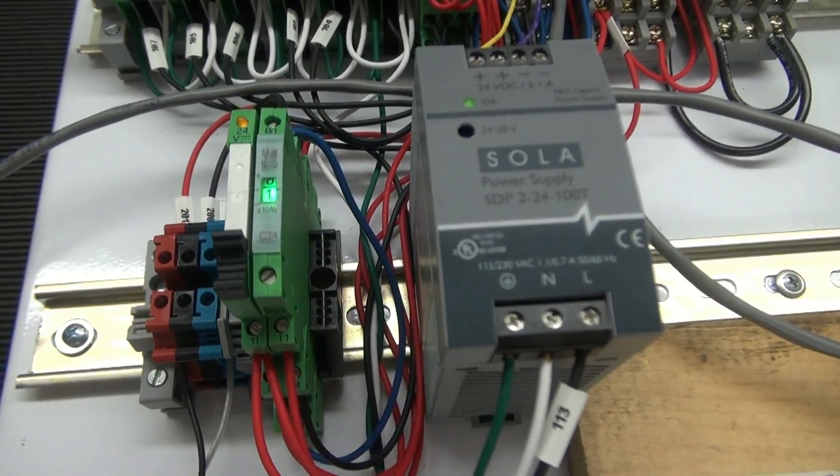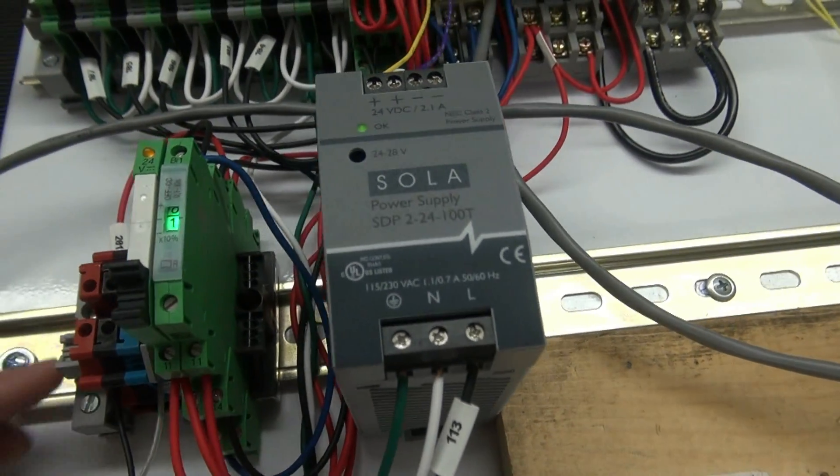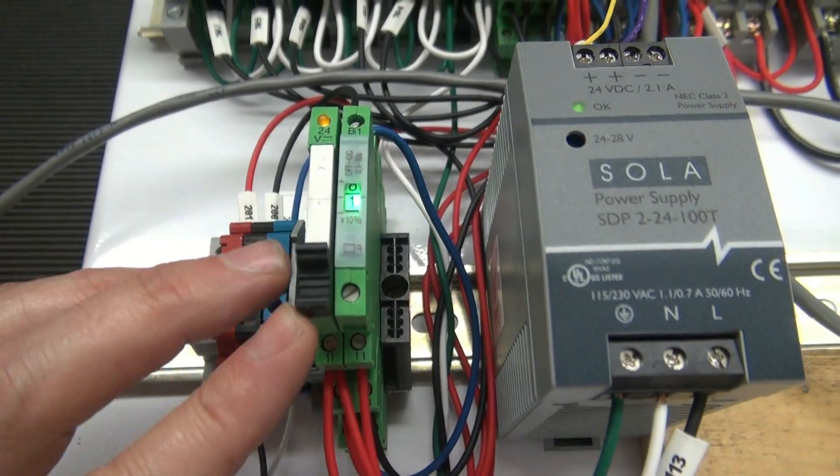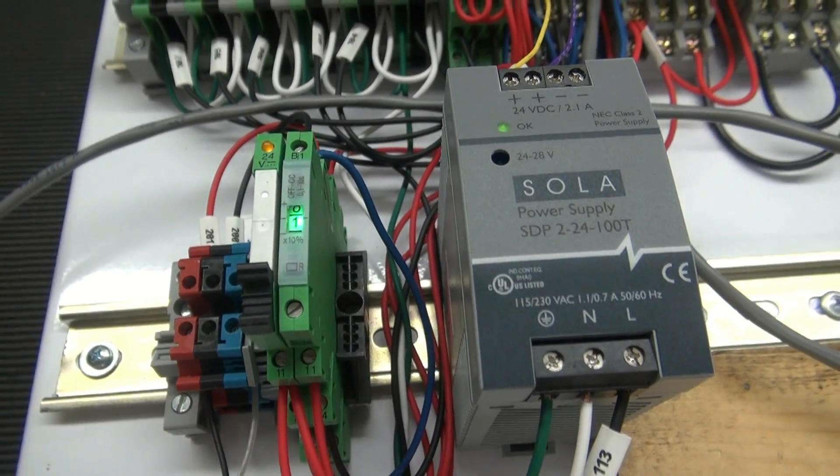Now here we've got the 24 volt control circuit which does your banner fiber optic to detect the part. A couple relays there make all that happen.